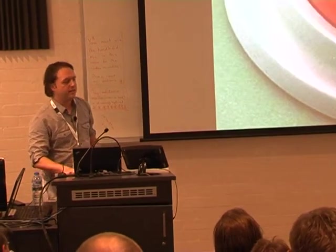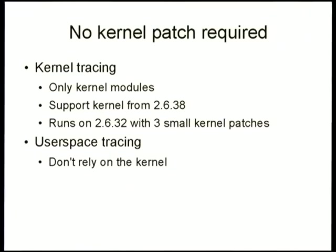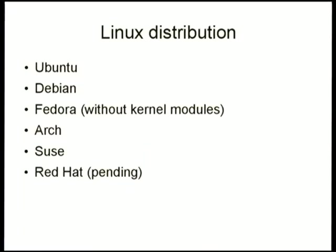The first thing we focused on is easy installation. Previously we needed kernel patches; now we've removed that requirement — it's only a couple of kernel modules. We support kernels from 2.6.38 up to the latest. If you need to run on a Red Hat 6 system at 2.6.32, you need a couple of small patches and we have an RPM package with those already applied. If you only want user space tracing, forget the kernel module — just install it directly. LTTNG is in most distributions: Ubuntu, Debian, Fedora, Arch. We're still pending on the Red Hat side but it should be in the next release.